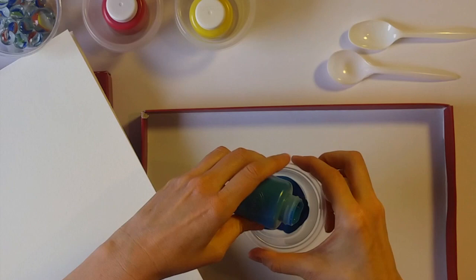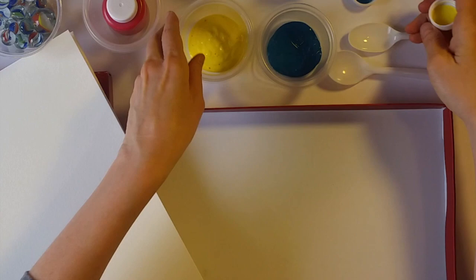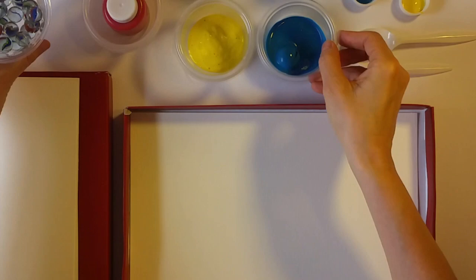You're gonna start by putting the paint into cups, the paper into the box, and then some of the marbles in the paint. Get them well coated.